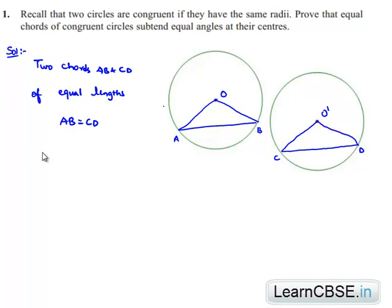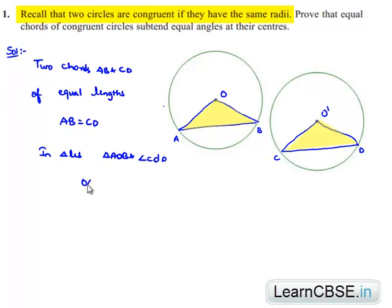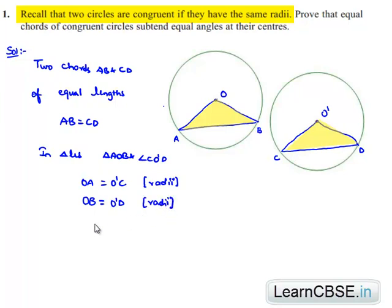In order to prove this, let us consider both triangles — that is, triangle AOB and triangle CO'D. OA is equal to O'C, since the figures are congruent their radii will be equal. And OB is equal to O'D, since the figures are congruent their radii will be equal.